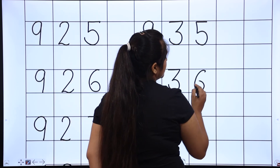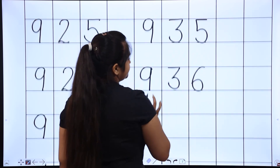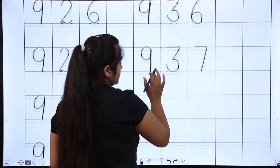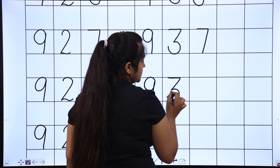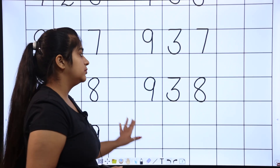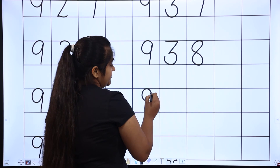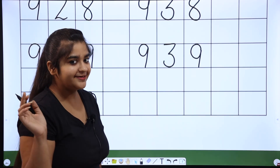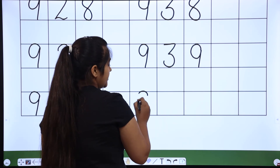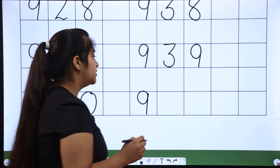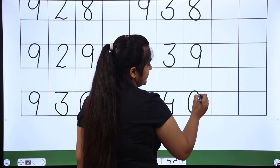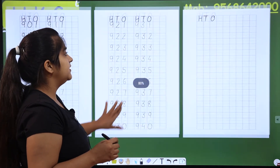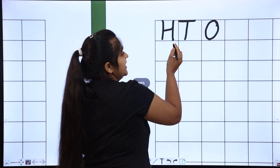Continuing: 936, 937, 938, 939. And then — is 950 next? No, after 939 comes 940. Very good. Now one line is ready. We will write quickly: 940, now comes 941. This is my last line.